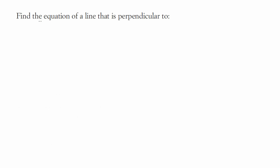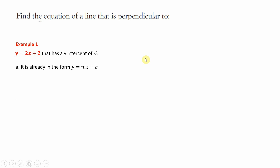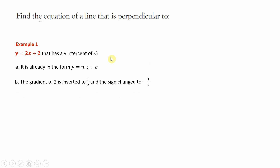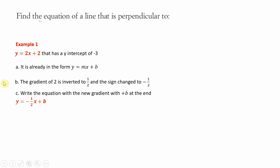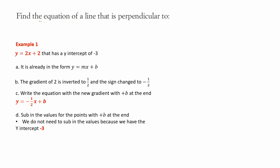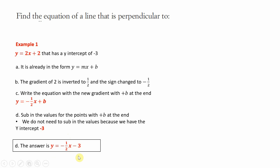Find the equation of a line that is perpendicular to y equals 2x plus 2 and has a y-intercept of minus 3. It's already in the right form, y equals mx plus b. We change the gradient, which is 2, by inverting it to become a half and changing the sign, so it becomes minus a half. We write the equation with the new gradient: y equals minus a half x plus b. Since we've got our y-intercept, we just put minus 3 instead of b. The answer is y equals minus a half x minus 3.